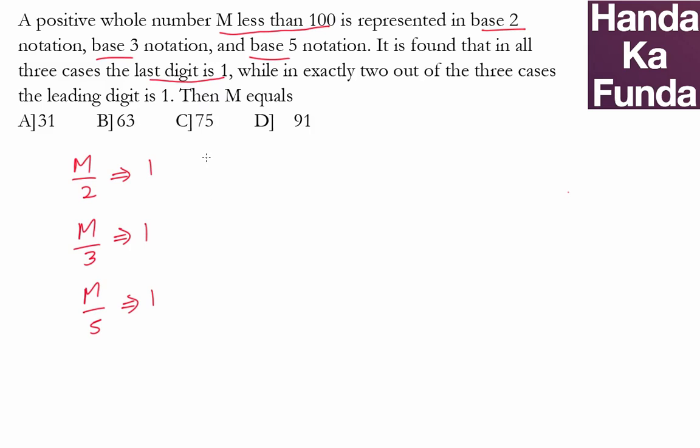Which essentially means my number is of the format 2k plus 1, 3k plus 1 as well and 5k plus 1 as well. Which means that my number is of the format of LCM of 2, 3 and 5 which is 30k plus 1. Now I know my number has to be of the format 30k plus 1.